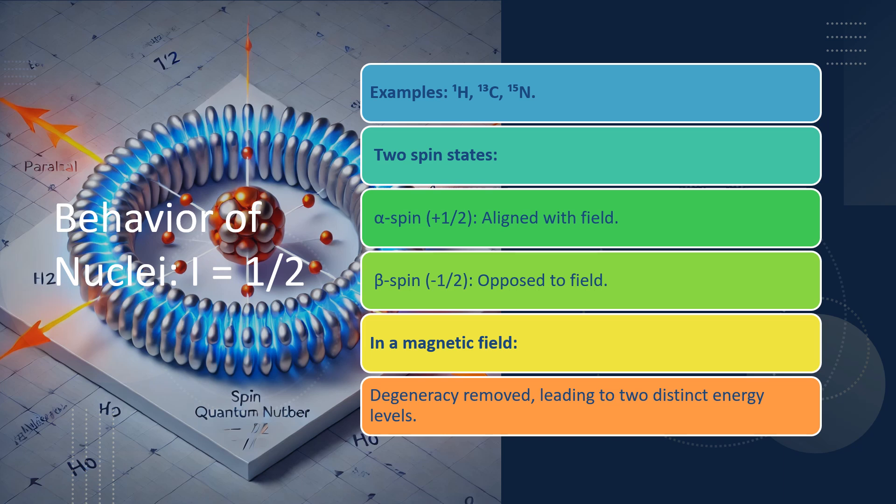When a nucleus has a spin quantum number of 1/2, it's relatively simple to understand its behavior. In a magnetic field, such nuclei have two possible energy states: aligned with the field or against it. These two states create the basis for many experiments, such as NMR. Hydrogen, with I = 1/2, is particularly important because it's abundant in the human body and easy to detect.